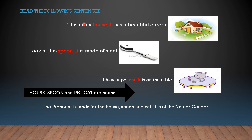Let's read the following: 'This is my house. It has a beautiful garden.' Also: 'Look at this spoon. It is made of steel.' And: 'I have a pet cat. It is on the table.' House, spoon and pet cat are nouns. The pronoun 'it' stands for house, spoon and cat. Although a cat is a living thing, we cannot say whether it is male or female, so we say 'it.' So it is neuter gender. Spoon and house are also neuter gender as they are non-living things.